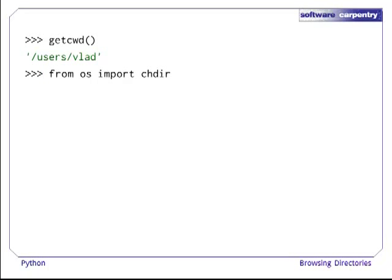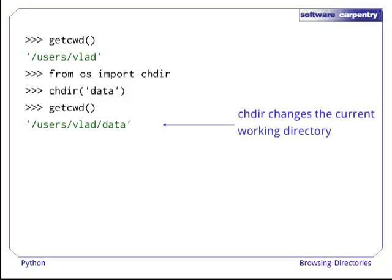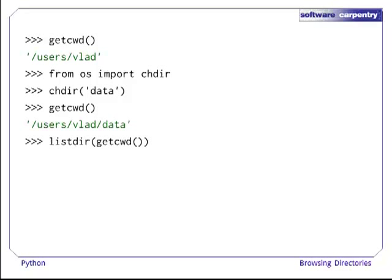To change the current working directory, we use the chdir function. This function takes one argument, the path of the directory, to be the new current working directory. This can be an absolute or a relative path. Let's run it to change into the data directory. We can use getcwd to check that we have indeed changed the working directory. And then, we can use listdir to see what's in data.